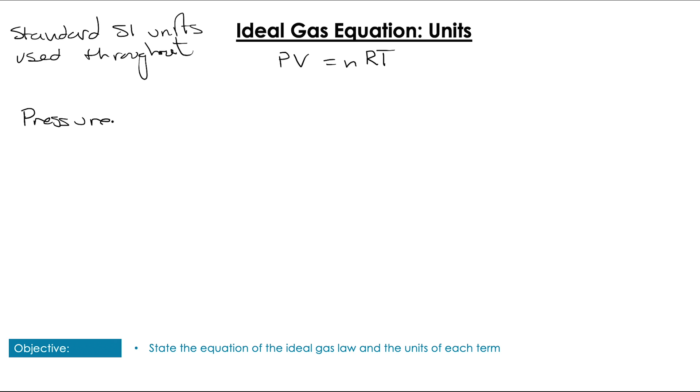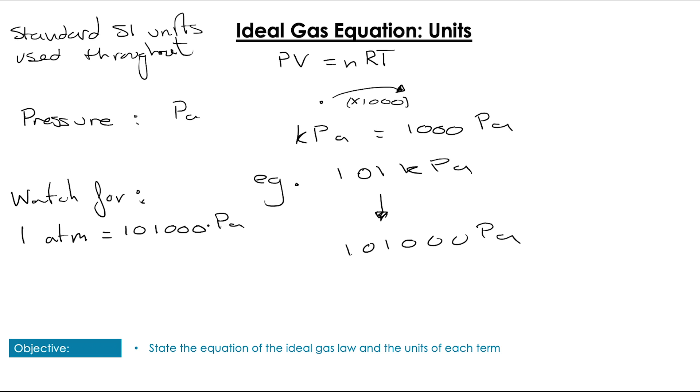Let's start with pressure. Pressure's units are given in pascals. You can have things given to you in kilopascals, which is 1,000 pascals is a kilopascal. So for example, if I have 101 kilopascals, then I'm going to need to multiply that value by 1,000 to be able to convert that into pascals, which in this case would be 101,000 pascals. So things to watch for in questions and online is 1 atmosphere, which equals 101,000 pascals, was given as STP pre-1982.